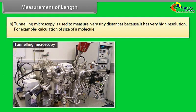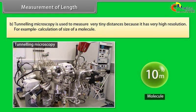The distance between P and Q is called basis. B) Tunneling microscopy is used to measure very tiny distances because it has very high resolution, for example calculation of size of a molecule.